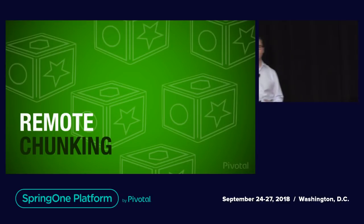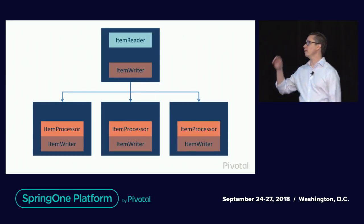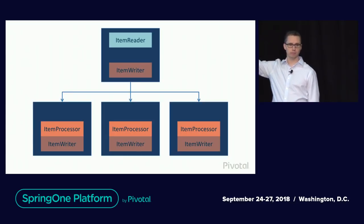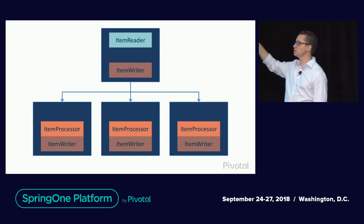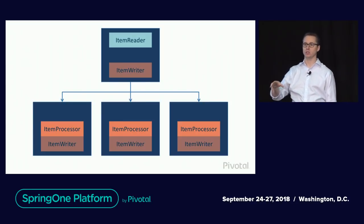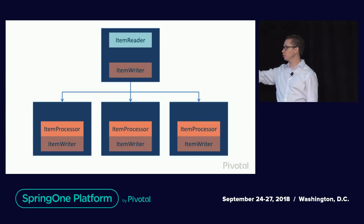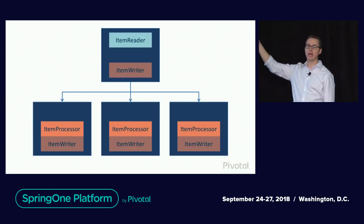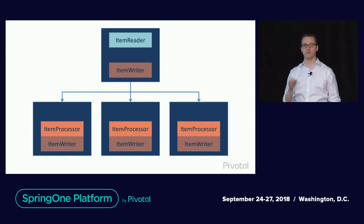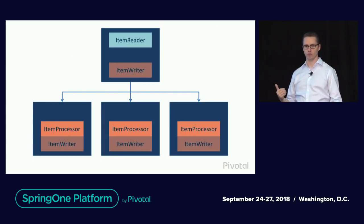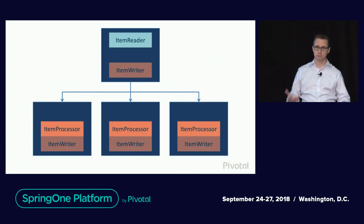The last option is remote chunking. Remote partitioning is great for general use cases, especially IO-bound workloads. But sometimes you need additional processing power beyond a single JVM — this is where remote chunking comes into play. The master has a regular item reader and a special chunk messaging channel item writer. Instead of writing metadata about what to process, it sends the actual data over the wire to the workers. The workers pick that work up, do the processing, then either write locally or send a message back to the master. This is a very IO-intensive option, so it's only useful when processing is the bottleneck. That's why partitioning is far more frequently used.